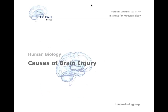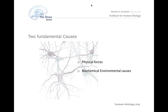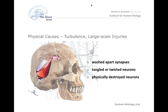There are two fundamental causes of brain injury. First, physical forces, as just discussed — they wash synapses apart; if more severe, they may tangle or twist neurons; if extreme, they may physically destroy neurons. Whether neurons are destroyed, tangled, or twisted, the problem is they no longer function in the network and are no longer available for the functionality of the brain.